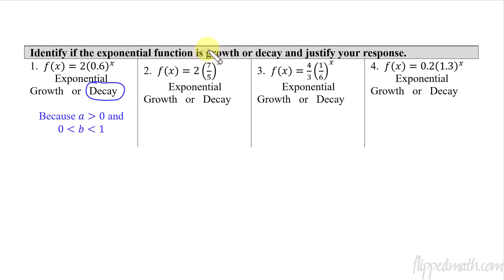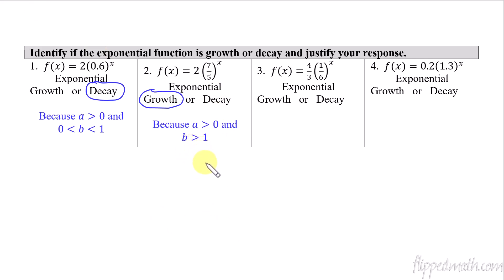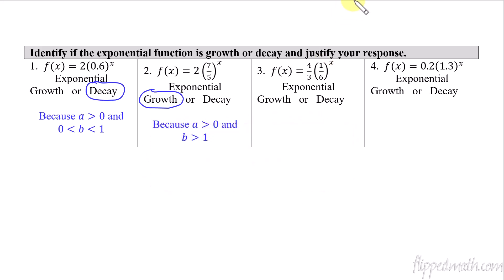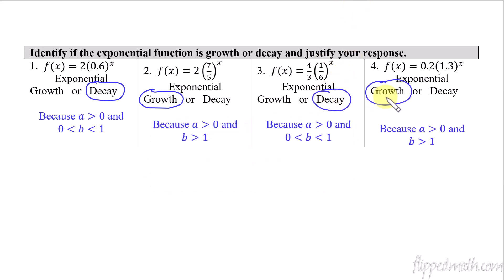For the next one, b is seven-fifths, which is larger than one, so this is exponential growth. Don't automatically assume a fraction means smaller than one — seven-fifths is larger than one. We justify it because a > 0 and b > 1. Go ahead and pause the video, do the last two problems, then check your answers. This one's decay, this one's growth, with justification statements provided.